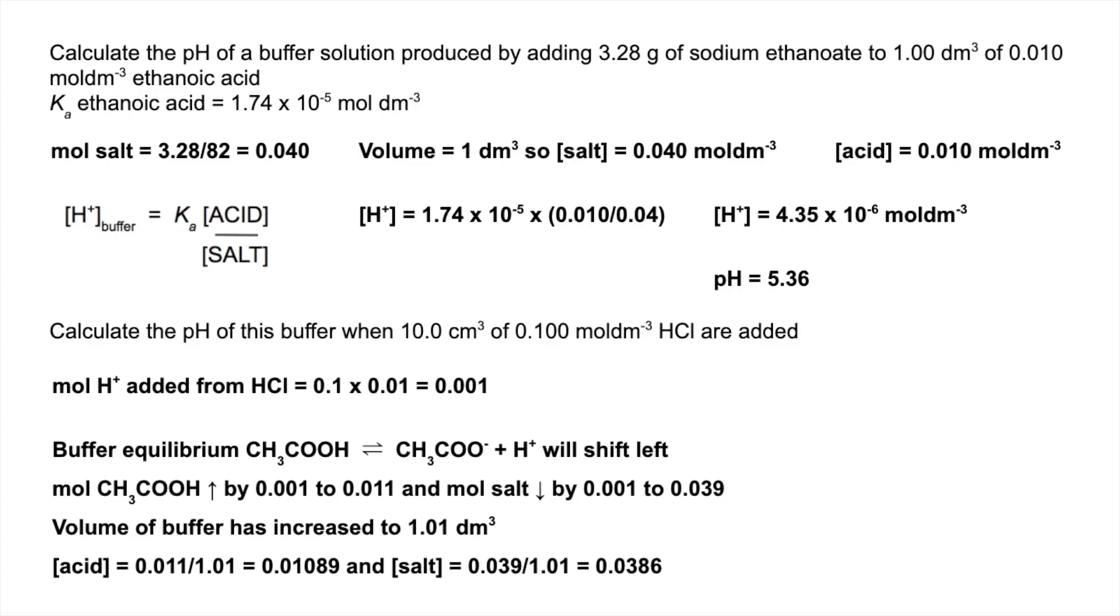So now we know the acid and salt concentration. We already knew the Ka value - it was given at the top of the question. We put them into Casadova salt and we get an H+ concentration of 4.91 × 10^-6 moles per decimeter cubed. Minus log that: 5.31.